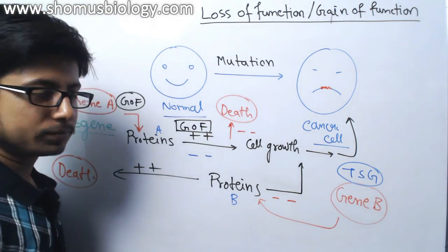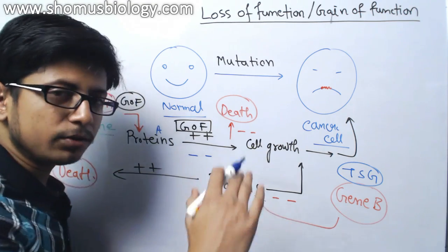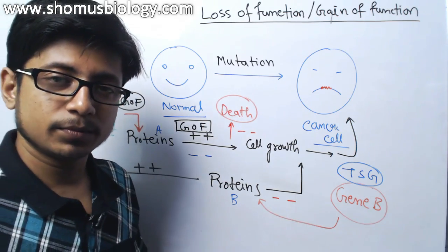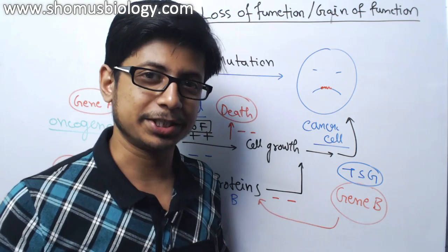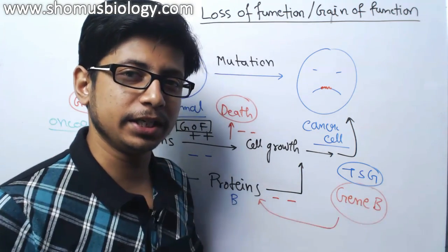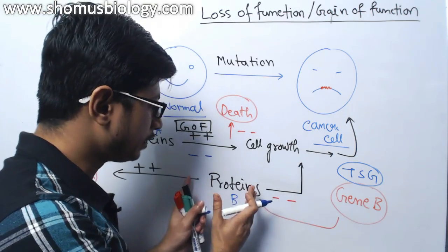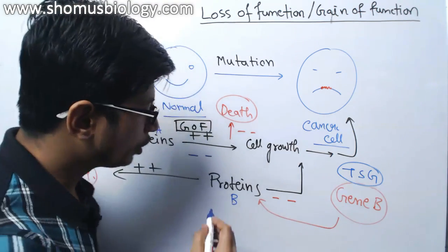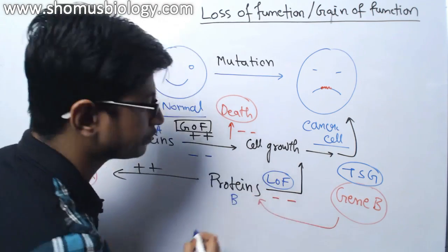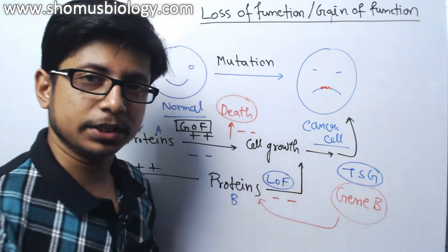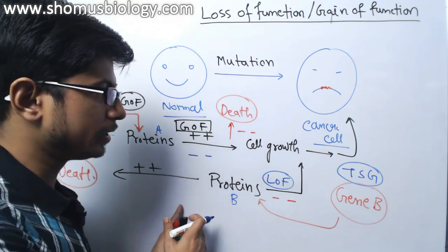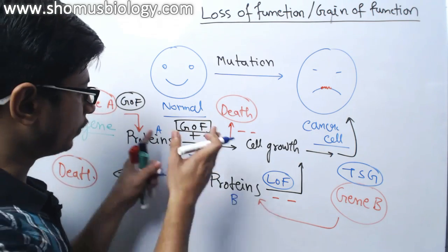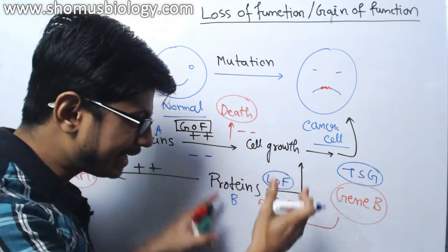This tumor suppressor gene gets a down-regulation of protein production, it turns into cancerous cell. If the proteins are produced less, we call it loss of function mutation, because due to a mutation in tumor suppressor gene, it is incapable of producing the proper amount of protein B. Less amount of protein B is prepared compared to the normal level, so you call it loss of function mutation. For a tumor suppressor gene, loss of function mutation converts a normal cell into cancerous cell. And for an oncogene, gain of function mutation can convert a cell into a cancerous cell. That is the idea.